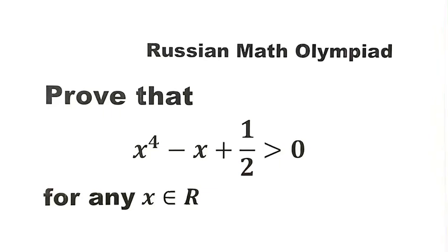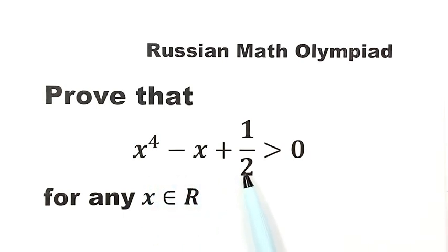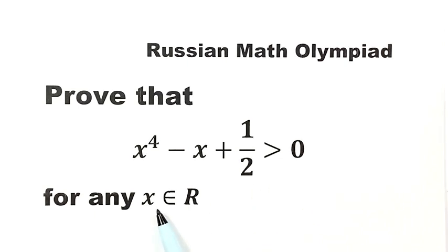In this video, we'll be solving a question from the Russian Math Olympiad. The question is: prove that x to the fourth minus x plus one half is bigger than zero for any real values of x.